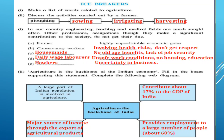Agriculture is the backbone of the Indian economy. Fill in the boxes supporting this statement, or complete the following web diagram. One example has been given by the bookmakers: a large part of the Indian population is involved in agriculture. Our country is well known for its agriculture. The next is a contribution of about 17% to the GDP — Gross Domestic Product — of India. From agriculture, nearly 17% contribution has been achieved. Rest of the things you can check out; a few examples have been provided.